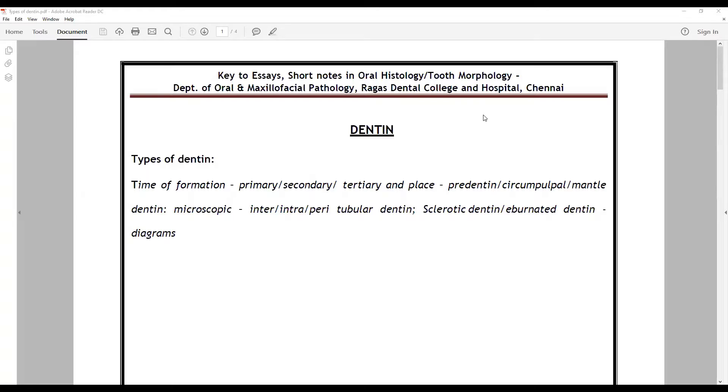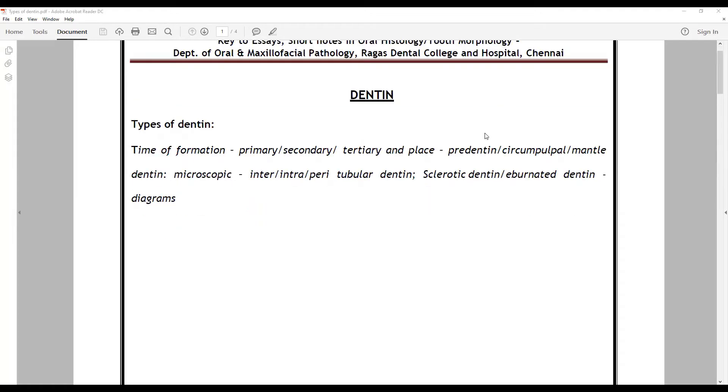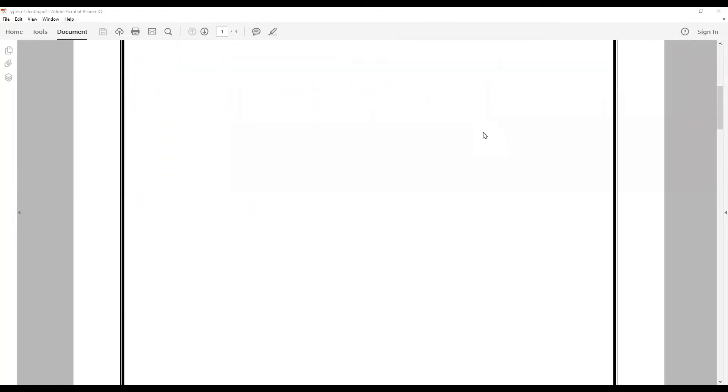We need to talk about the time of formation, how the various types of classifications of dentin happen. This will be accompanied usually by other questions like discuss in detail about primary dentin, secondary dentin, or even about the age changes in dentin. Some other lead follow-up questions will be there, but the prime crux will be on the classification of the types of dentin.